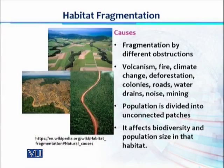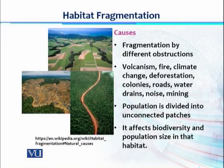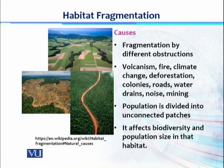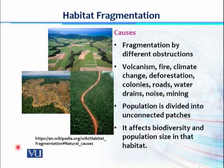In habitat fragmentation, certain causes are dividing or breaking up one large patch into smaller patches. There are different kinds of obstructions — these obstructions could be natural. For example, volcanic eruption could be one obstruction. Bush fire, which is naturally happening, is another. Climate change could also be a barrier, as can deforestation.